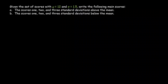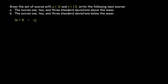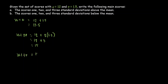Above the mean: 12 plus 1.5 equals 13.5. Next, 12 plus 2 times 1.5 — so 2 times 1.5 is 3 — so 12 plus 3 equals 15. Then for 3 standard deviations: 12 plus 3 times 1.5 equals 4.5, so 12 plus 4.5 equals 16.5.